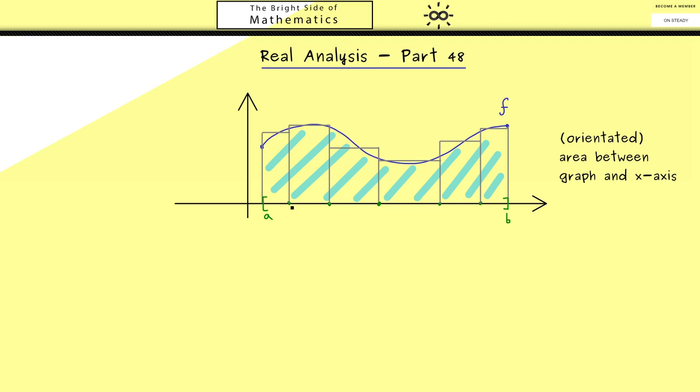You should see if we look at one rectangle here, we already have the width, and the height is then given by one value of the function f inside this interval. For example, the picture could look like this where we have 6 rectangles. Of course, the area of a rectangle can be calculated in a simple way—it's just the width times the height. Then we just have to sum up all the areas of the rectangles to get an approximation of the area we are interested in.